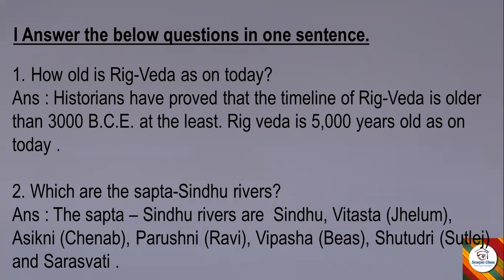Question 2: Which are the Saptasindhu rivers? Answer: The Saptasindhu rivers are Sindhu, Vitasta (that is Jhelam), Asikni, Chenab, Parushni, Ravi, Vipasha, Beas, Shutudri, Satlej and Saraswati. So these are the names of Saptasindhu rivers.